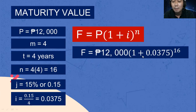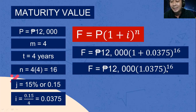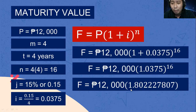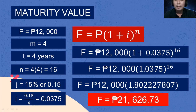First step, add 1 plus 0.0375. The answer is 1.0375. After that, we raise 1.0375 to the power of 16. The value of 1.0375 raised to 16 is 1.802227807. Then we multiply 12,000 by 1.802227807. The final answer is 21,626.73. This is the final value.